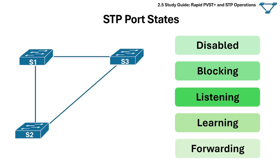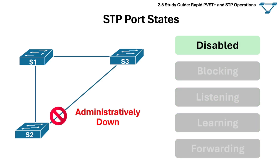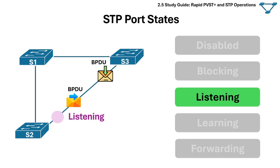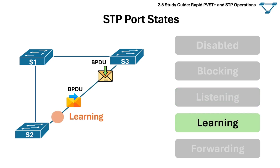Here is a breakdown of each port state. A switch port that is administratively shut down is in the disabled state and does not participate in STP calculations at all. When a port is first initialized, it starts in the blocking state — it does not forward traffic and only receives and processes BPDUs, allowing the switch to learn the topology without causing loops. If the port is needed in the topology, it moves to the listening state, where it still does not forward frames but begins sending and receiving BPDUs to announce its presence and prepare to join the STP topology. Next is the learning state, where the port begins to learn MAC addresses to build its forwarding table by watching incoming frames, but still does not forward traffic.